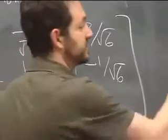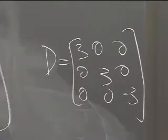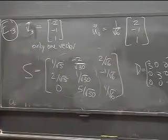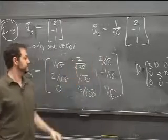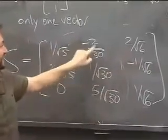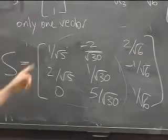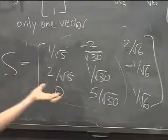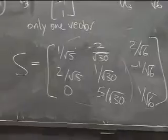The D matrix remains diag(3, 3, −3). All we've done is pick a different basis for the two eigenspaces so that S is orthogonal. You can verify orthogonality: dot products of the rows come out to zero. The spectral theorem guarantees this works precisely because A is symmetric.